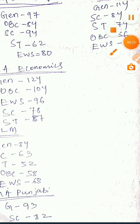Next, for Master of Library and Information Science: General is 96, OBC is 112, SC is 76, ST is 83, EWS is 84.